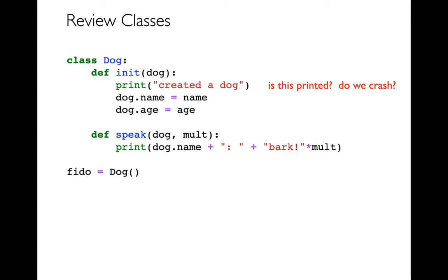The only methods that get called automatically are what we call special methods. And there's a number of them that we're going to be learning some of them today. But all the special methods will have two underscores before and after the name. I don't see any special methods here. So nothing gets called automatically. Nothing is printed. And of course we don't crash.